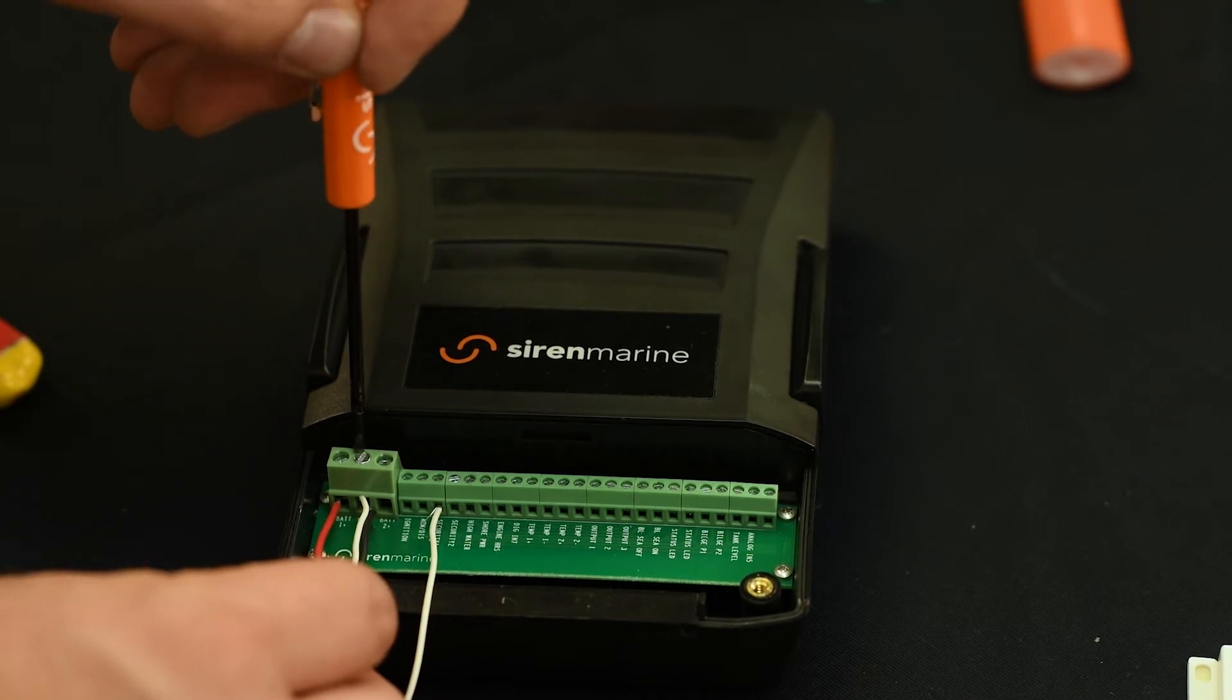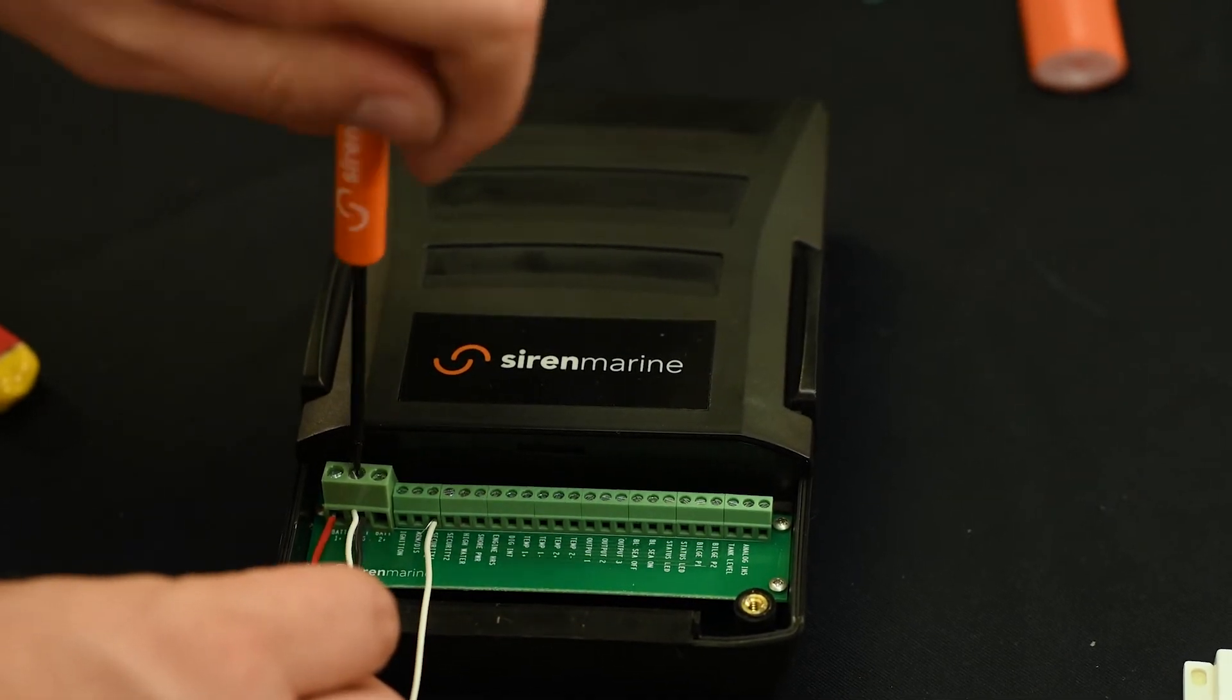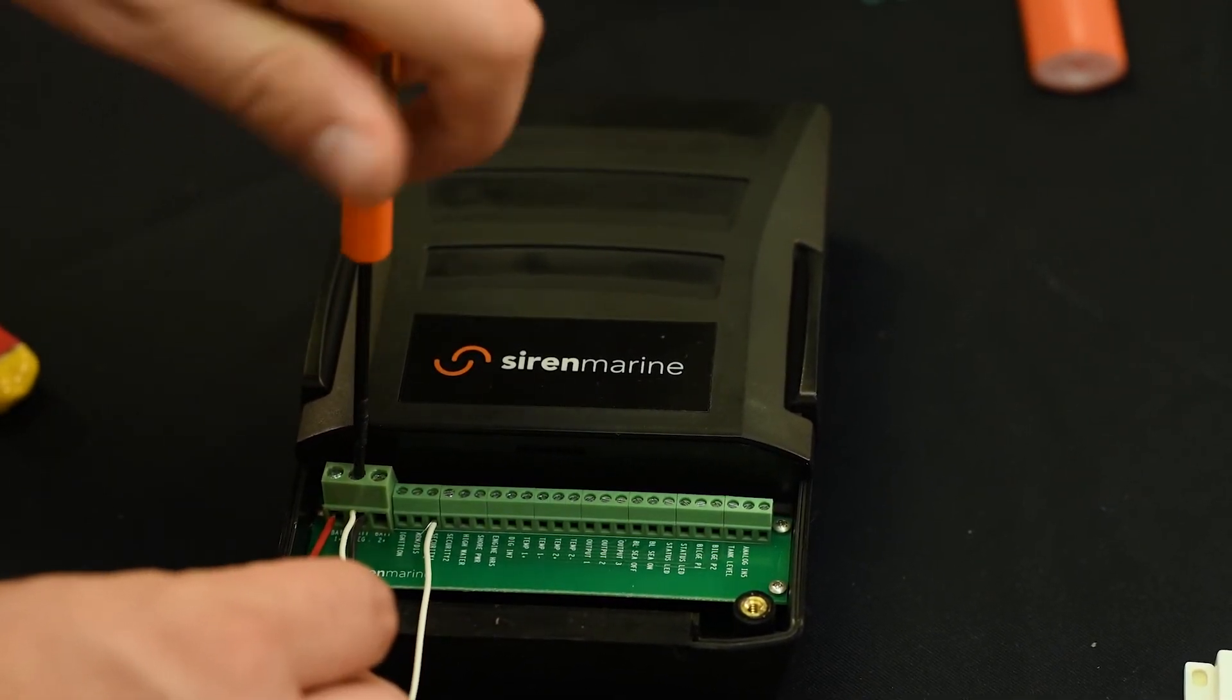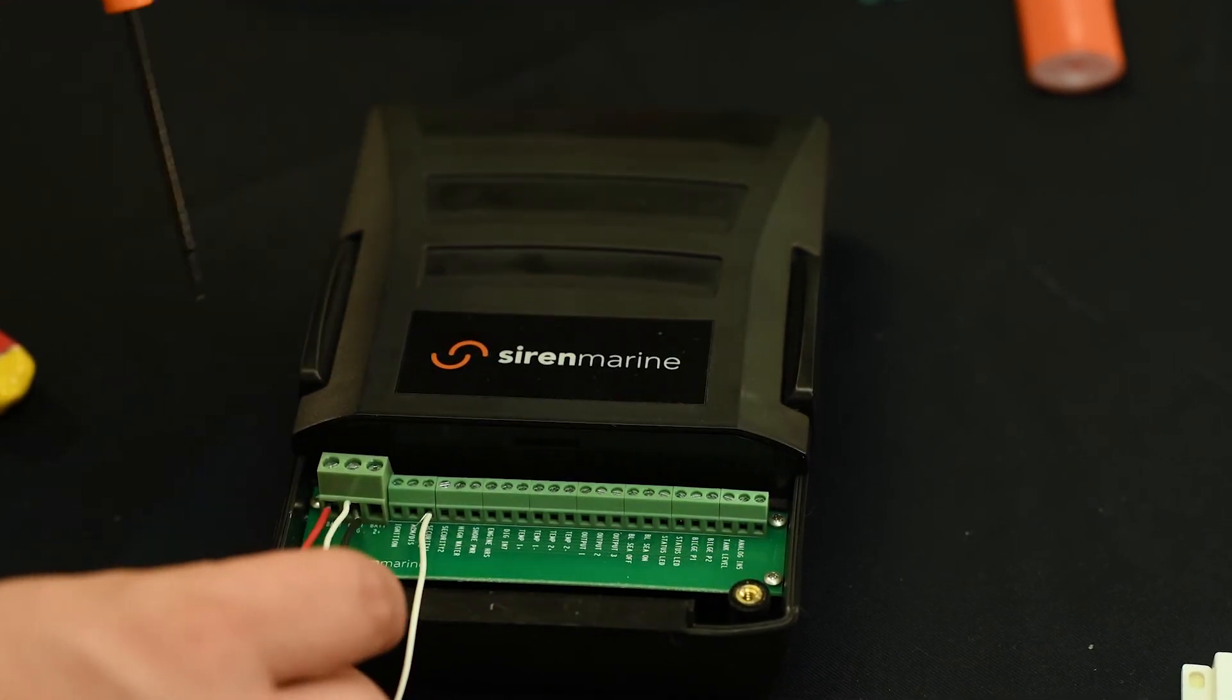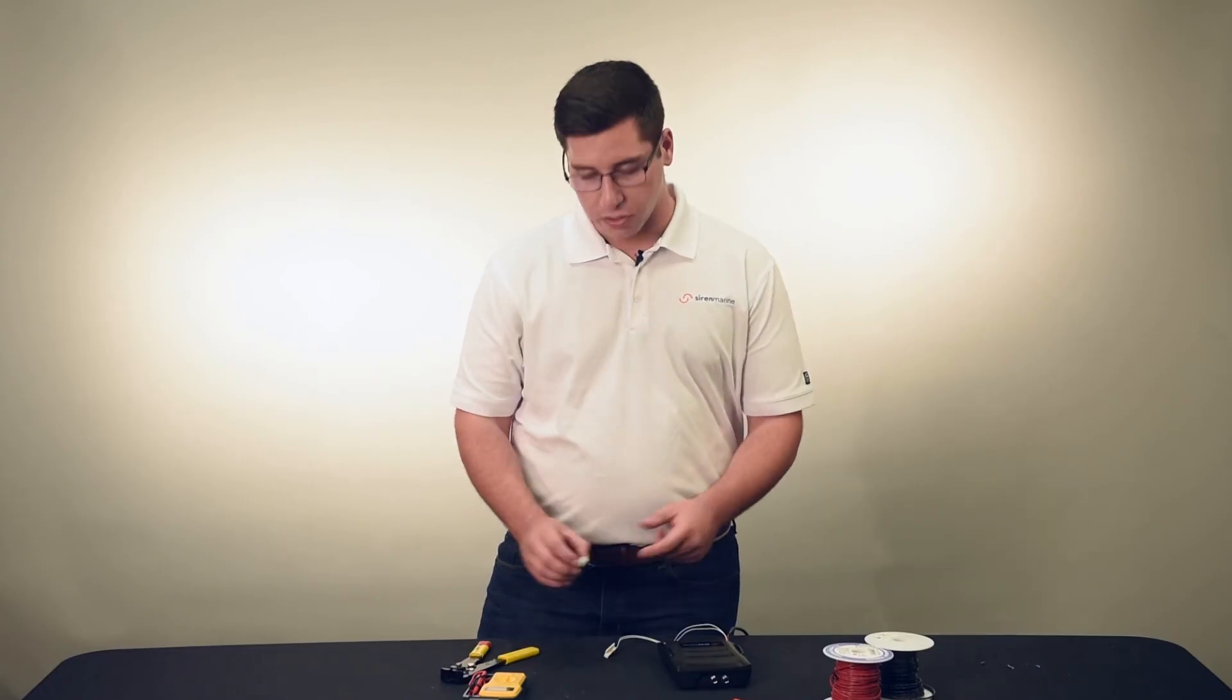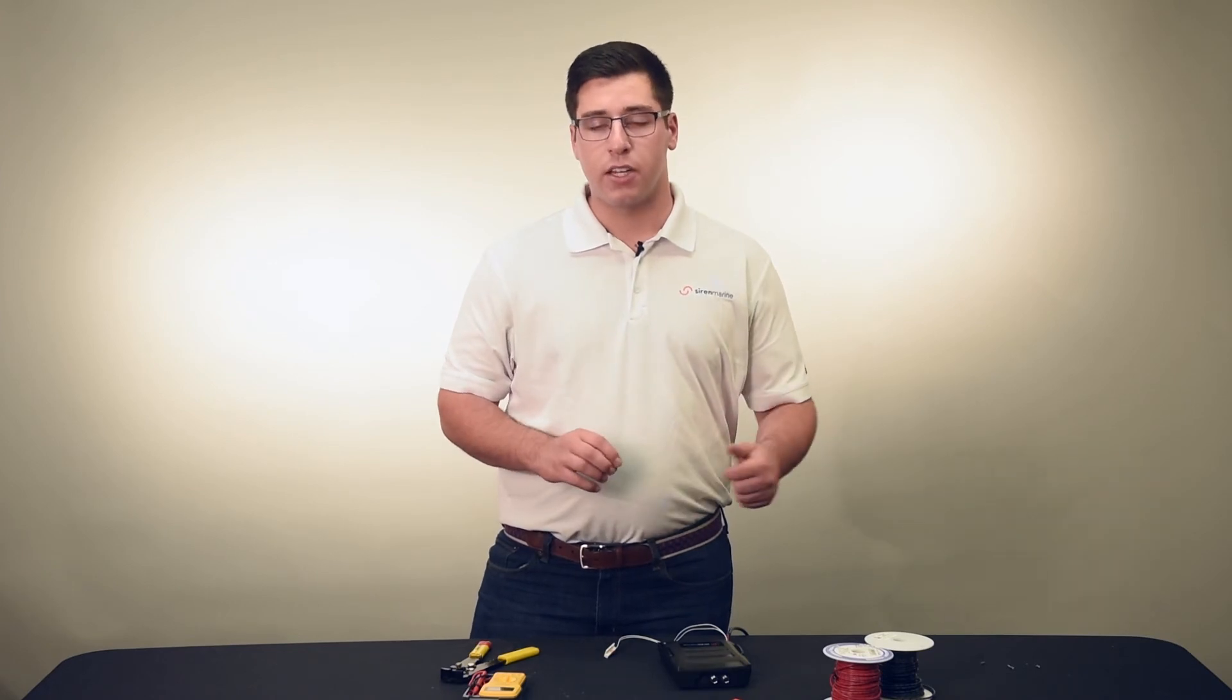Now the other end of the magnetic reed switch, if this is a slider door, a hatch, a center console door, anything like that, would be mounted on the base of the door itself or the jam. So when this sensor closes and opens, it's going to send you the correct alert.